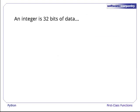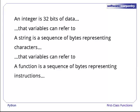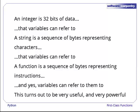As we've seen in previous episodes, an integer is just 32 bits of data that a variable can refer to, and a string is just a sequence of bytes that variables can also refer to. Well, it turns out that a function is just another sequence of bytes, ones that happen to represent instructions, and yes, variables can refer to them too. This insight, the fact that code is just another kind of data and can be manipulated like integers or strings, is one of the most useful and powerful in all computing.